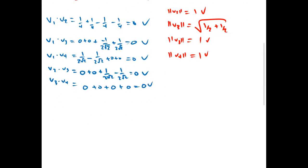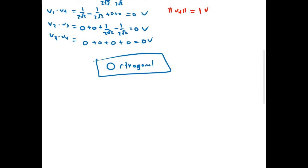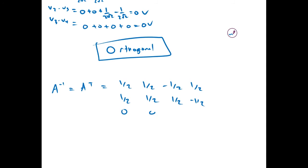Since all of our columns are orthogonal and all columns have a magnitude of 1, and we have a square matrix, this matrix is orthogonal. And since it's orthogonal, the inverse of A is going to equal its transpose. So all we have to do is swap all the columns and flip it around the diagonal. This is what our inverse will look like.